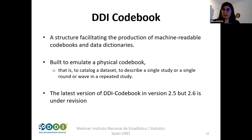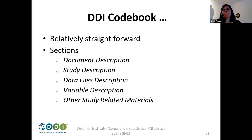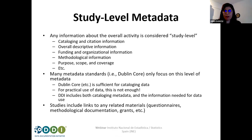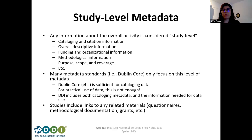A DDI Codebook is pretty straightforward. You have five main sections whose names are descriptive: the document description, the study description, the data files description, the variable description, and other study-related materials like questionnaires or reports. At the study level, you'll have any information about the overall activity — cataloging and citation information, an abstract, overall descriptive information, information about funding, grants, organizations, all the methodological information such as sampling, weights, purpose, scope, and coverage.